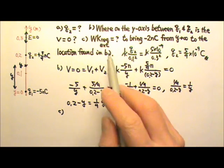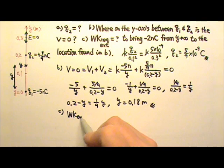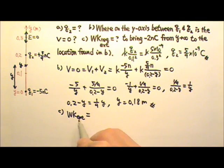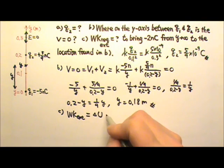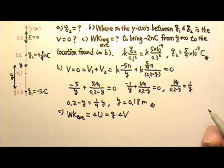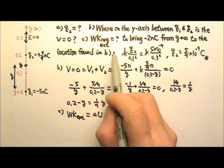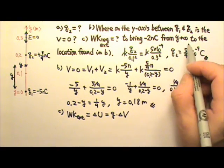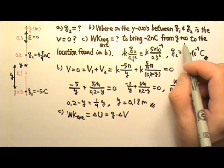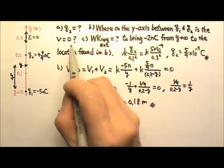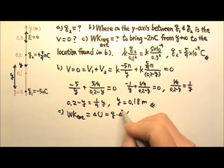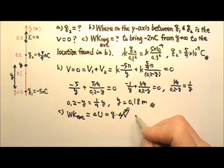For Part C, we want the work done by an external agent to move the charge. By energy conservation, the work done by the external agent equals the change in potential energy, which is Q times delta V. We're moving the charge from infinity to the location found in Part B. Since the potential at infinity is zero and the potential at the Part B location is also zero, delta V is zero. So the work required is zero.